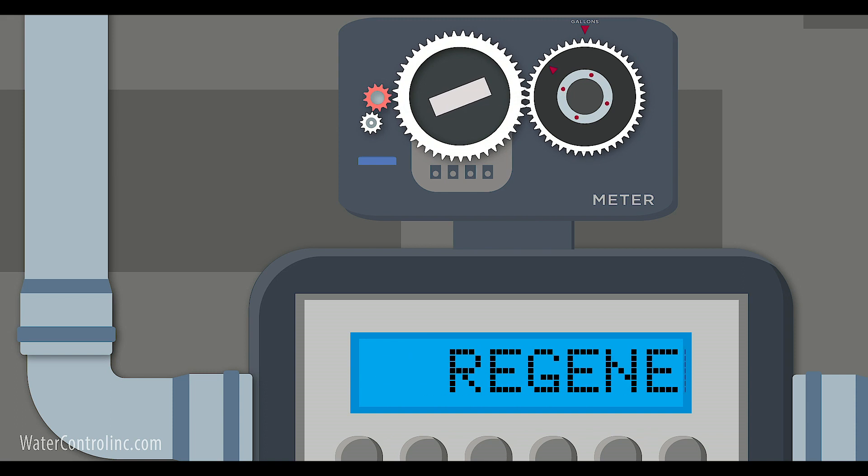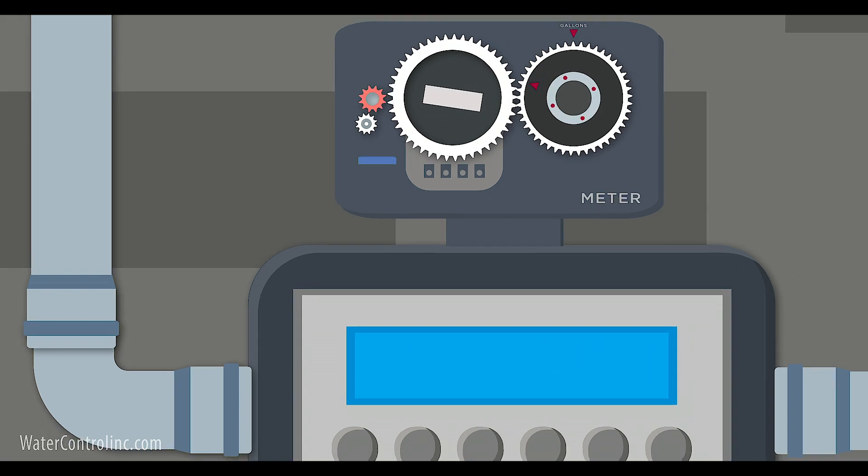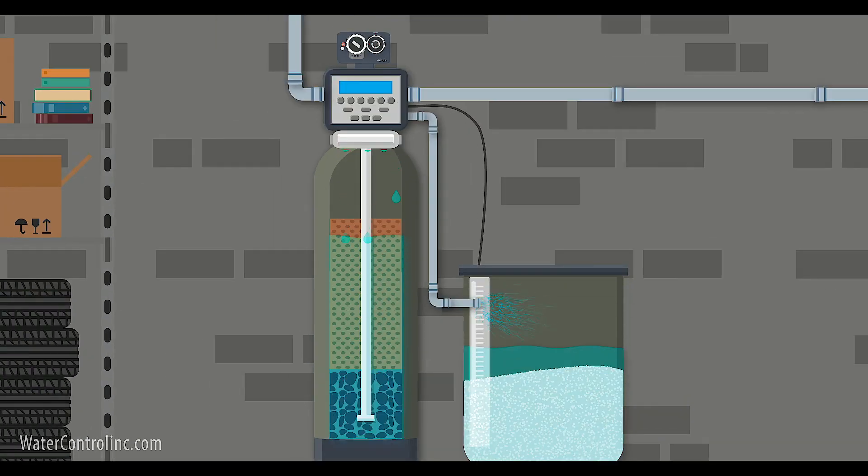And make sure those systems are set up and programmed correctly too. Number two, consider a brine reclamation package. It's a simple system for recovering and recycling a portion of the salt water used in softener regeneration.